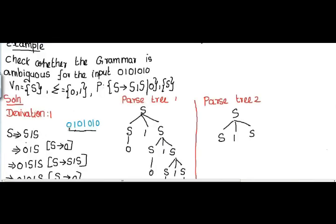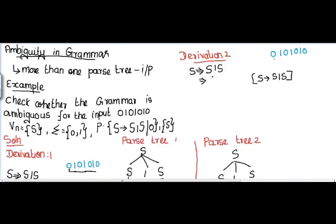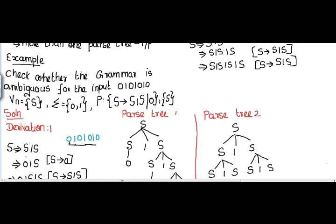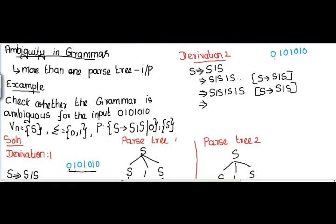There is one more possibility — I can substitute S → S1S instead. So instead of this S I substitute S1S, giving S1S and the next 1S. Since I have three 1s, I substitute S → S1S one more time. This gives S1S and the remaining 1S 1S, so I have three 1s. The next input I need is 0, so instead of S I substitute 0, giving 0 1 S 1 S 1 S. I completed the first two characters.